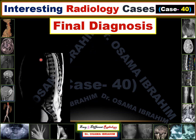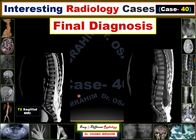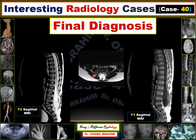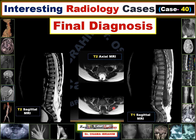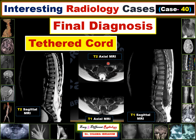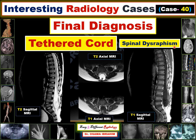The final diagnosis for this case: sagittal T2-weighted imaging and sagittal T1-weighted imaging with CSF appearing dark, along with axial T2 and axial T1, show an abnormal location of the cord with a thickened filum terminale. This abnormality is called tethered cord. Tethered cord is part of spinal dysraphism. It can be associated with other anomalies or it can be diagnosed alone, as in this case. The final diagnosis is tethered cord.